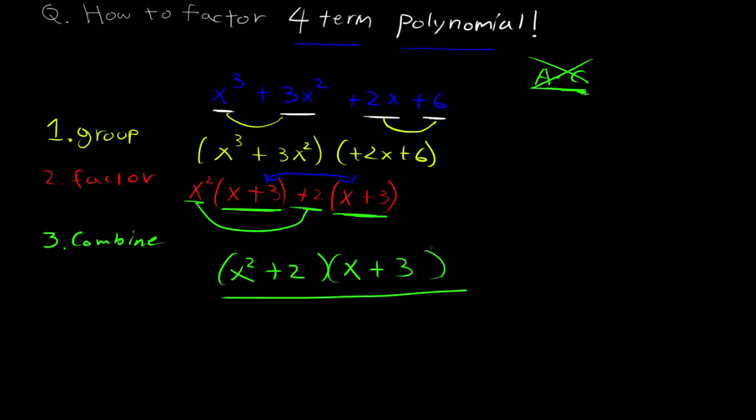That's how you solve four term polynomials. Don't try to use AC method right away when you see four terms. Just use this three-step method. If you guys have any questions about how to solve other stuff, please leave questions in the comments below. I'll see you guys next time. Thanks!